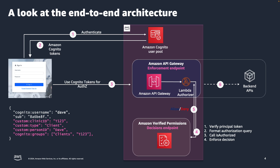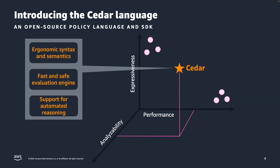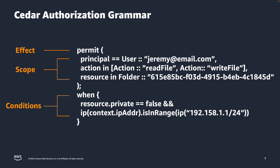Amazon Verified Permissions uses the Cedar language to manage fine-grained permissions in your custom applications. Cedar language is an open-source policy language. It has an ergonomic syntax, which means it is human readable and easy to use. AWS did the heavy lifting to create a fast and safe evaluation engine. It supports automated reasoning, which means you can test with limited variables to determine if a policy does what it's supposed to do. Cedar policies consist of three parts: an effect, a scope, and an optional set of conditions. We will get more into this when we start writing Cedar policies in upcoming demos.